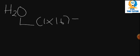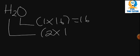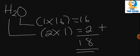Let's look at water, H₂O. How can we find the relative formula mass of water? We know that there is one oxygen in water, and the mass of oxygen is 16, giving us 16. We've got two hydrogen atoms whose mass is 1, giving us 2. Then 16 plus 2 gives us 18 as the relative formula mass. The molar mass of water is 18 grams per mole.